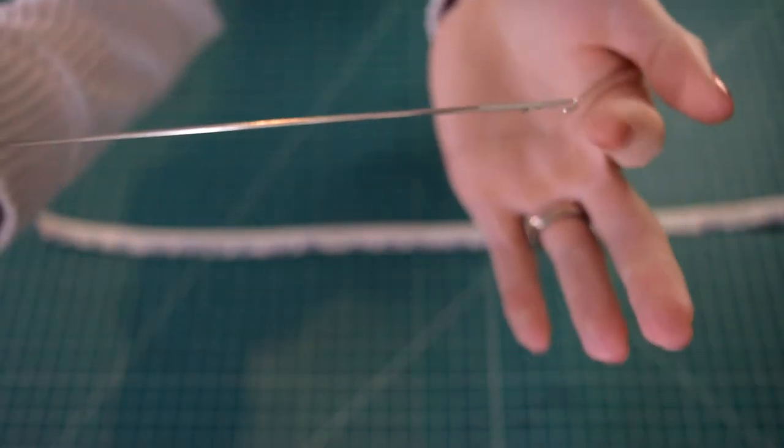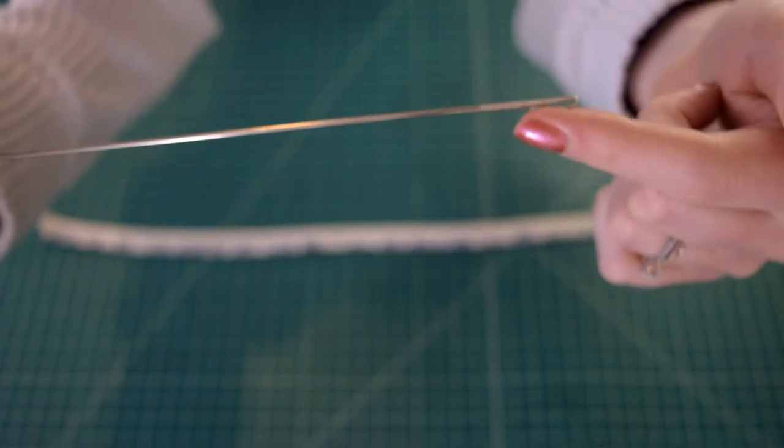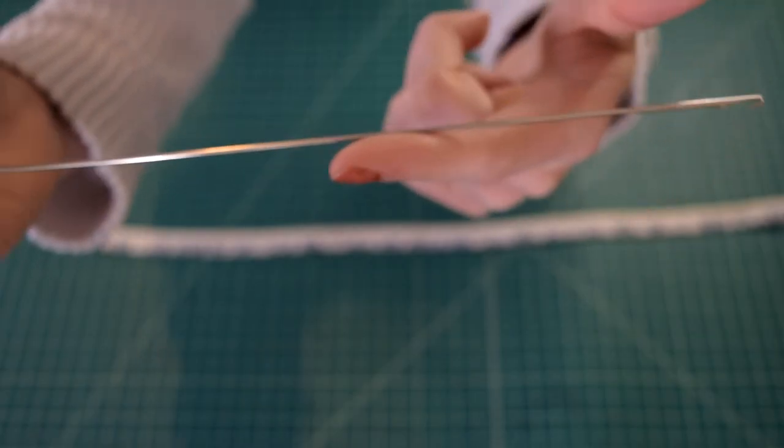So basically when you put the loop turner into the fabric tube, this part is going to be down against this part of the loop turner so that it doesn't catch on the fabric.